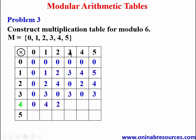Continuing the row of 4: 4 times 3 gives 12, and 12 minus 12 gives 0. Then 4 times 4 gives 16; 16 minus 12 gives 4. And 4 times 5 gives 20; 20 minus 18 gives 2, since 18 is a multiple of 6. We record 2 and are done with that row.